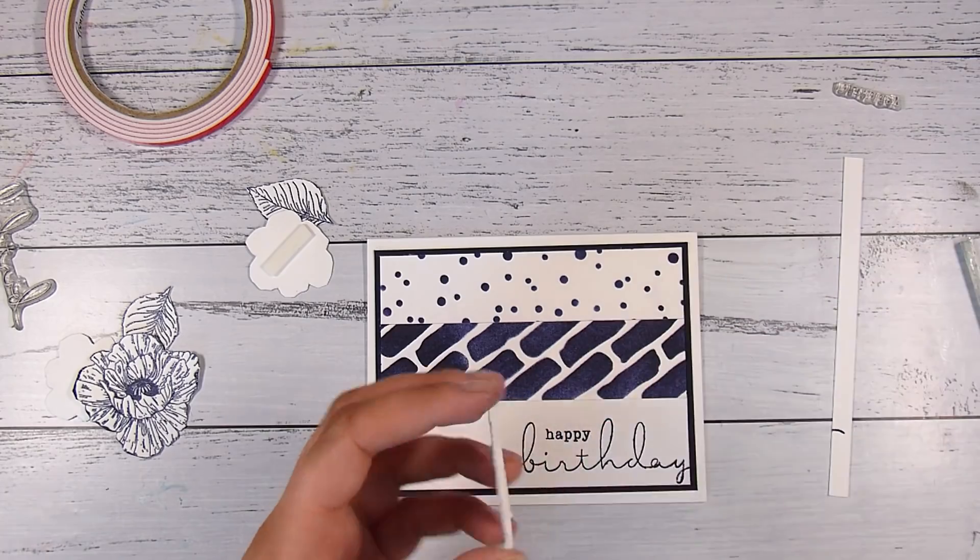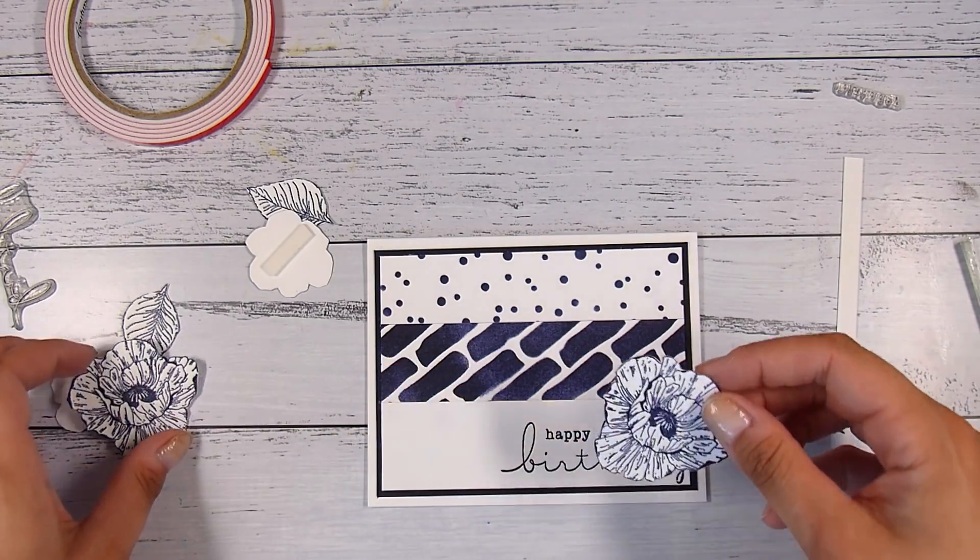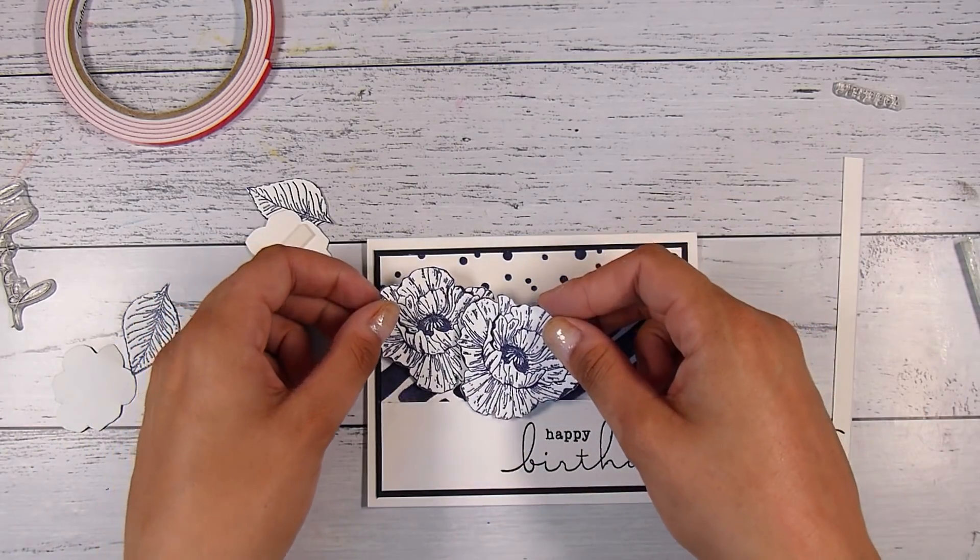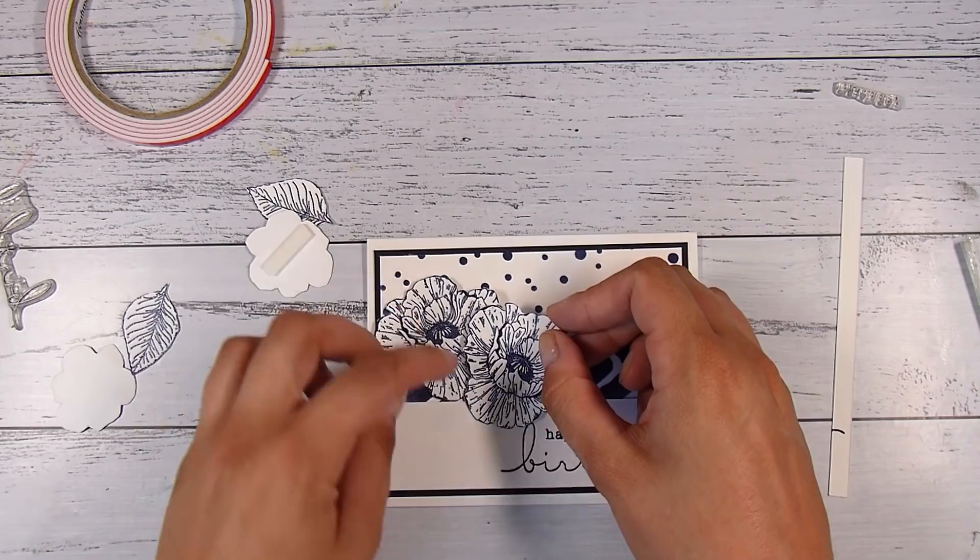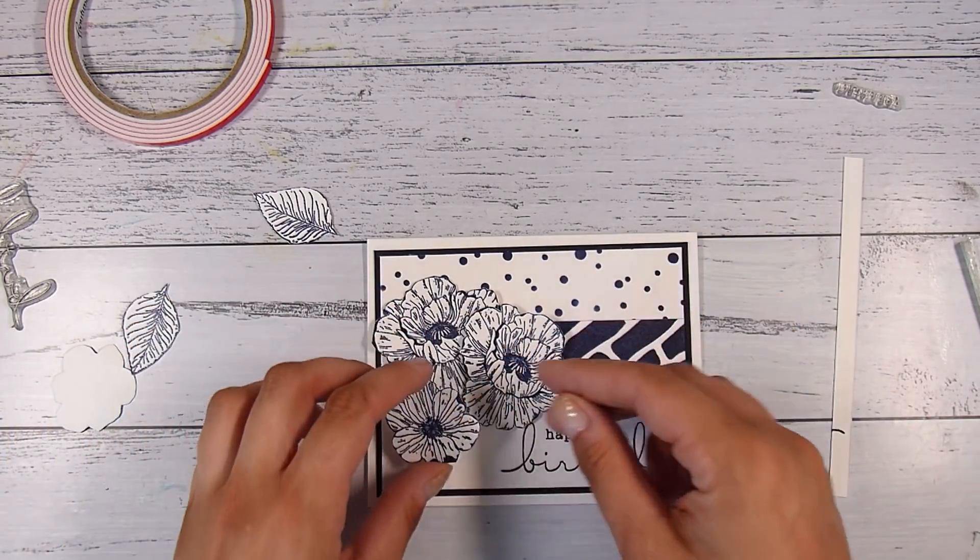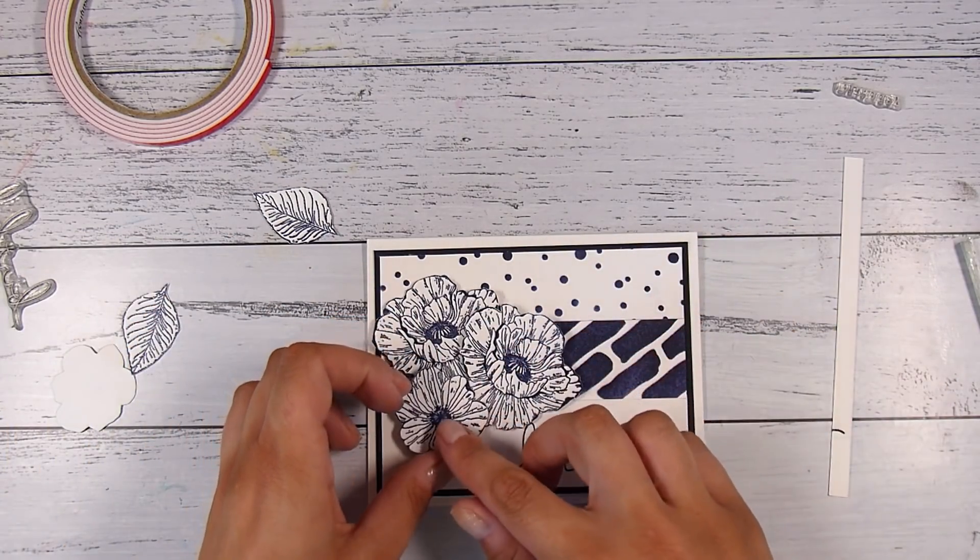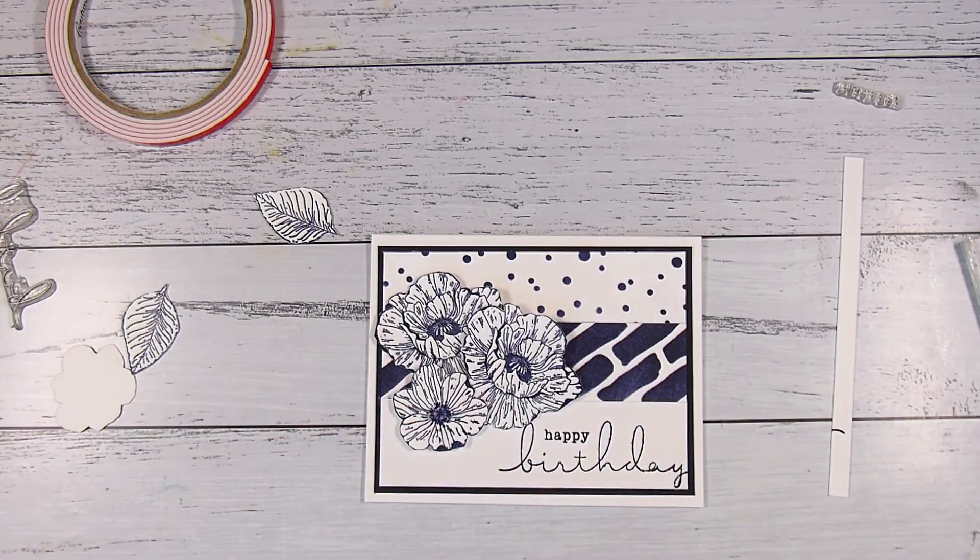If you were going to be mailing these and you wanted to keep them all flat, that would work too. Or if they needed to go in a little box, you could keep the foam tape off. But a little bit was fine here. Then I'm going to add just one of the leaves.